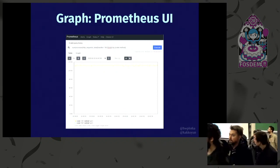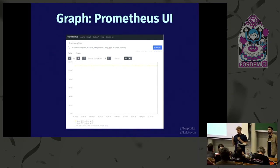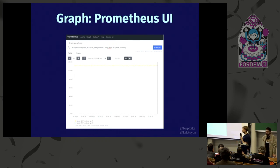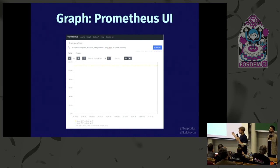Here we can see the number of requests per minute by code and method. We have about 120 total — some are errors, most are successes. Our load balancer now has insights that allow us to debug and know what's happening inside. This looks easy — a few lines of code and we have metrics. So everything is perfect... well, not really.